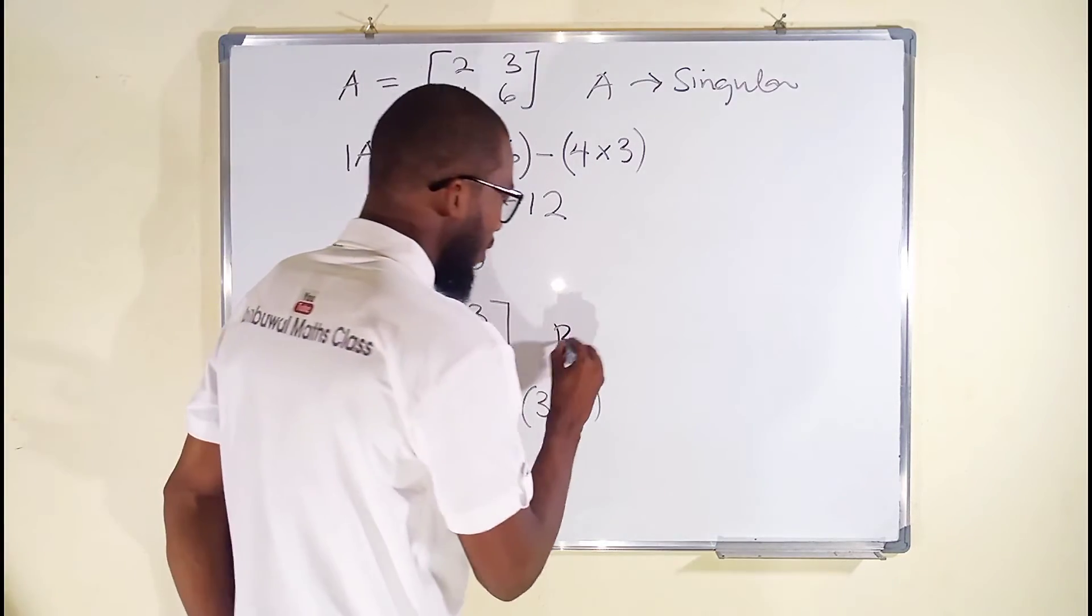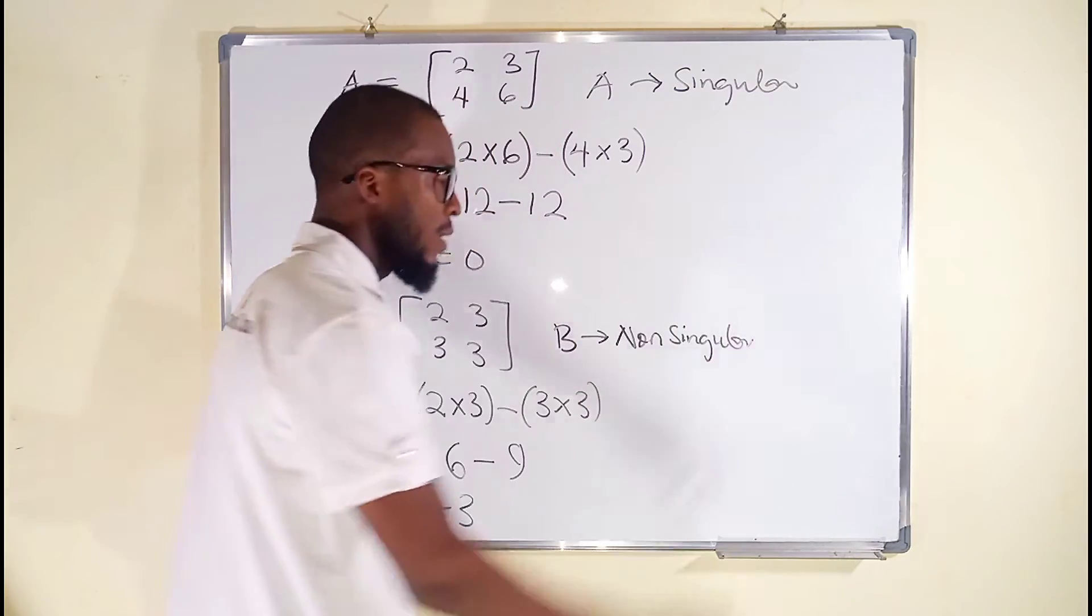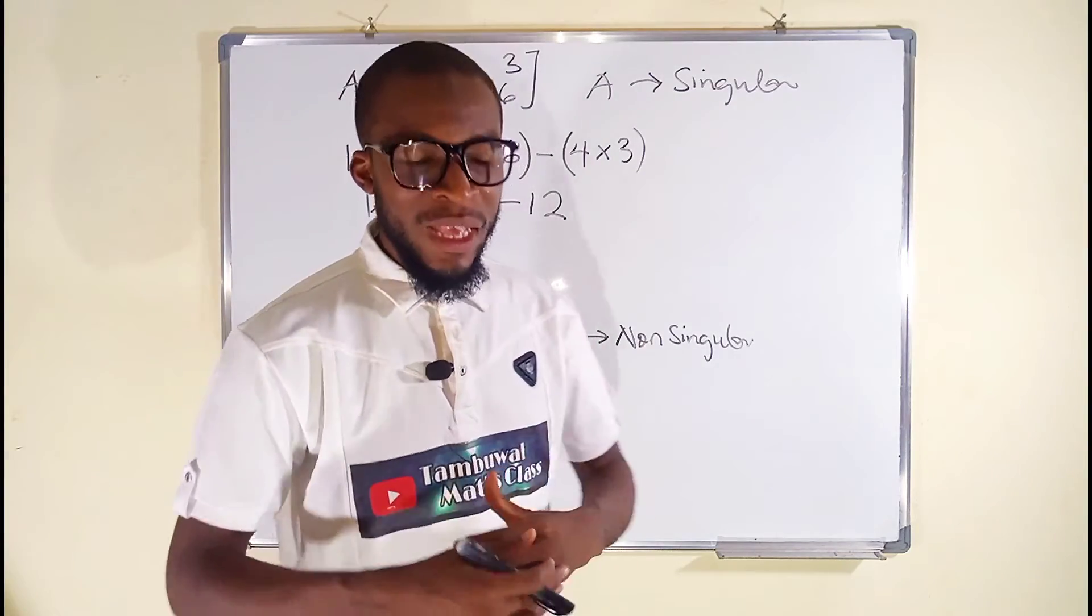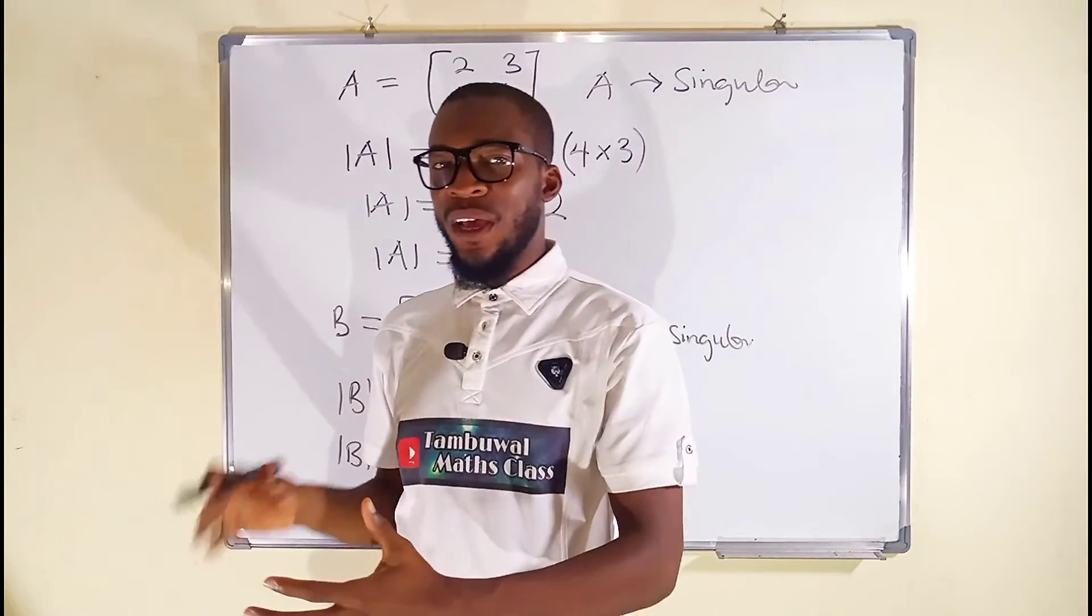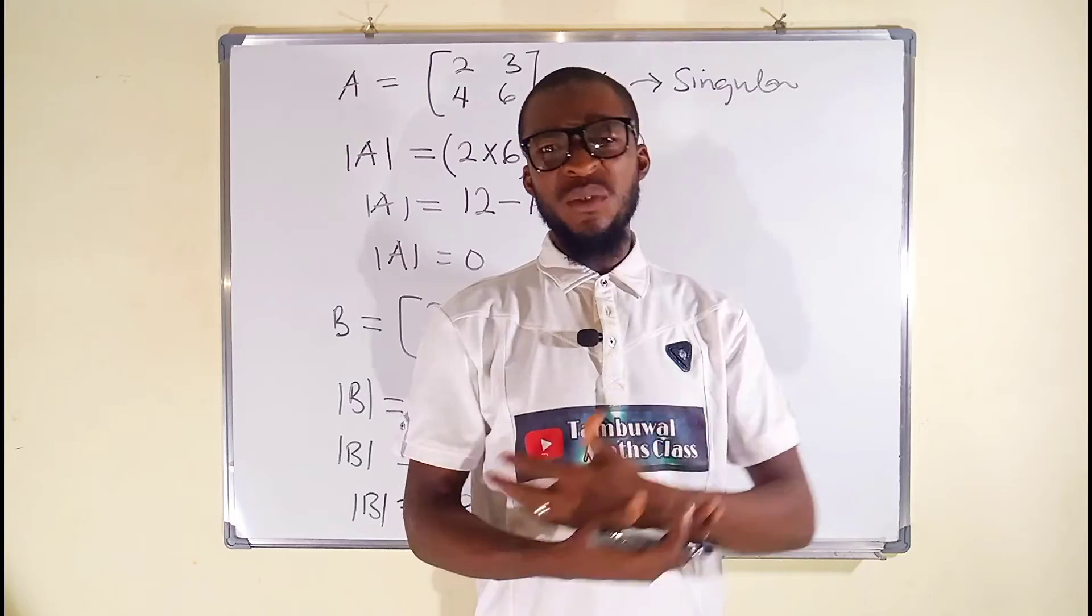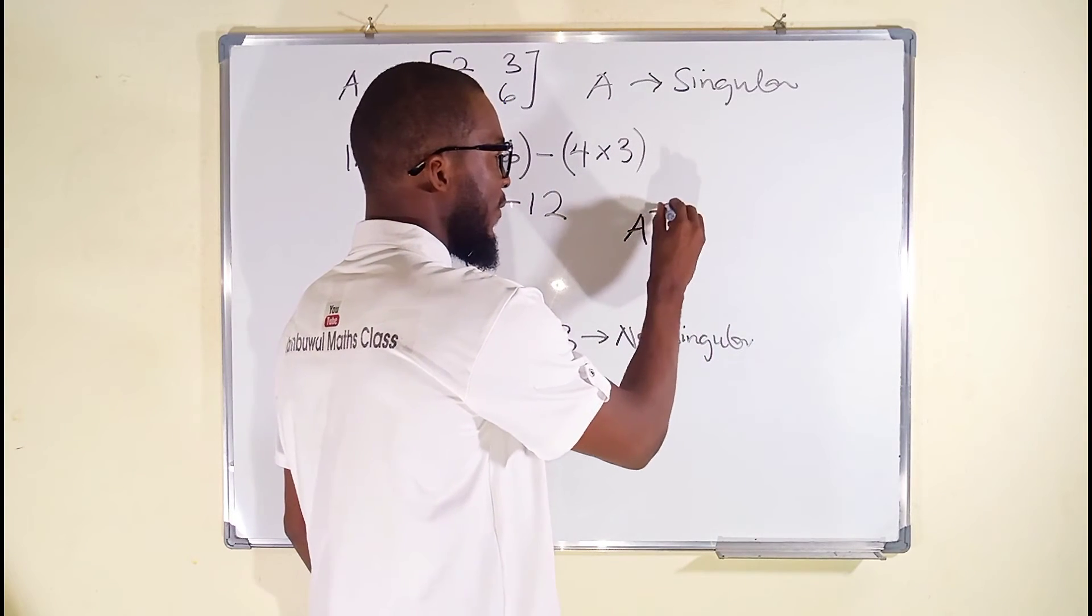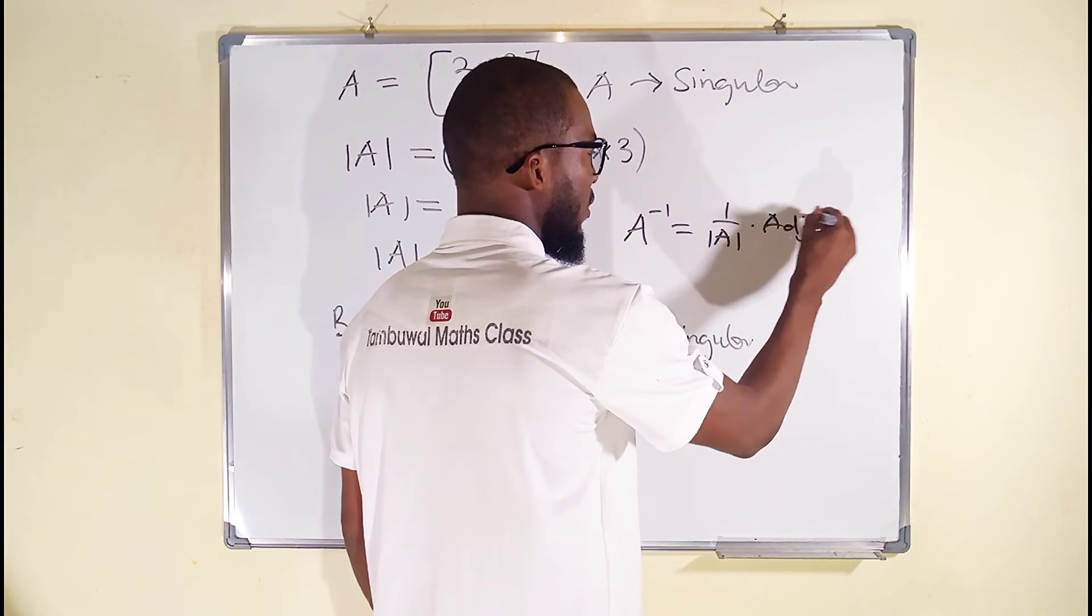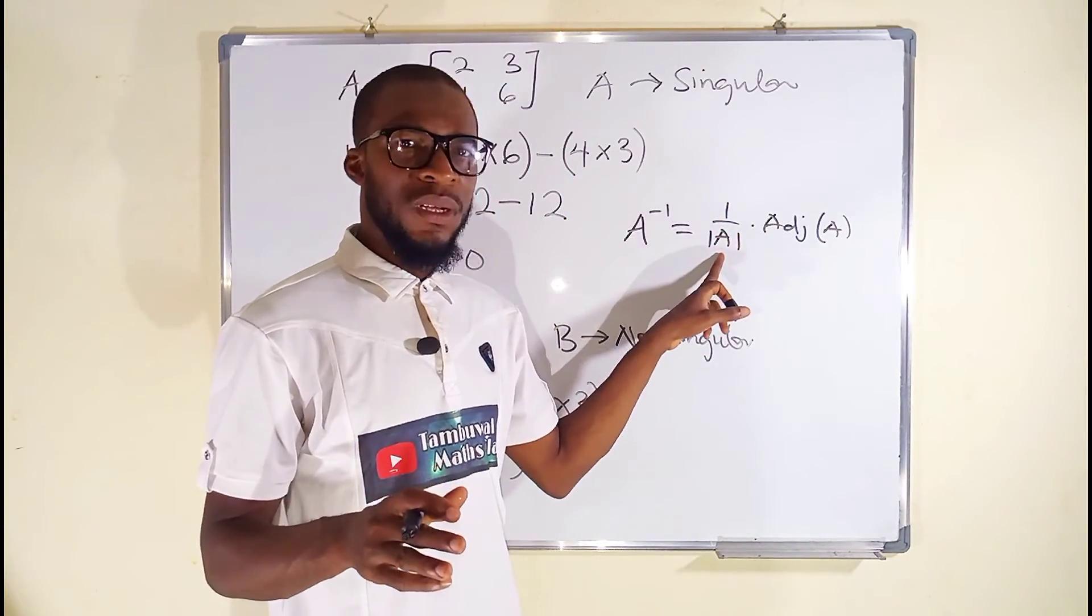But why is this important? Remember, while finding the inverse of any matrix, you have to find the determinant of that matrix, and in the end you multiply the adjoint of that matrix by the reciprocal of the determinant. The formula is: A inverse equals 1 over the determinant of that matrix multiplied by the adjoint of the same matrix. So if the determinant is 0, 1 over 0 is undefined. Multiplied by anything is still undefined, and hence we say that matrix has no inverse.